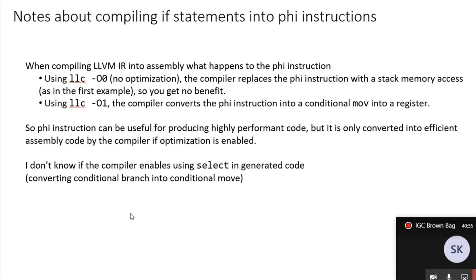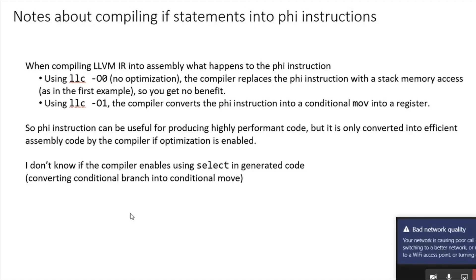Some notes about compiling if statements with phi instructions: when compiling to assembly without optimization, the compiler replaces the phi instruction with stack memory access, as in the first example — so you get no benefit. However, if you turn on the first level of optimization, the compiler converts the phi instruction into a conditional move into a register. Whether the compiler also converts a conditional branch into a conditional move using select when optimization is enabled is something I'm actually not certain about.